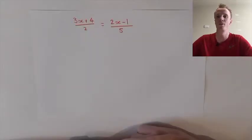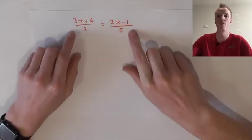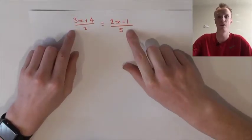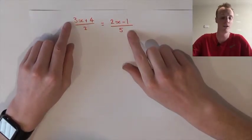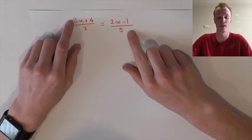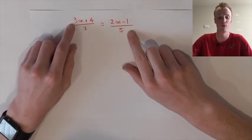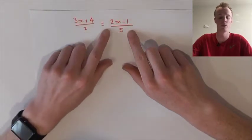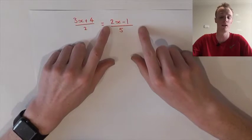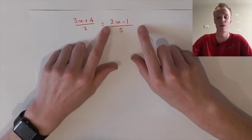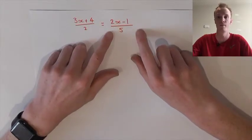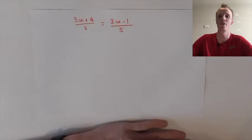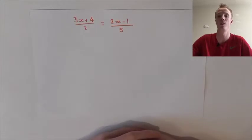The next question we're going to explore today is when we have a fraction on both sides of the equation. On the left-hand side we have 3x plus 4 all divided by 2, and that equals the right-hand side of 2x subtract 1 all divided by 5.